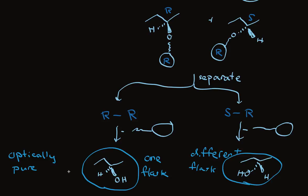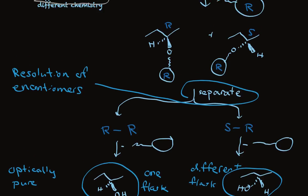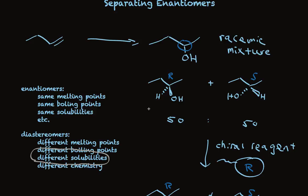This process is called resolution. It simply means we're separating them. Now this is a chemical method that's been used for a very long time. It was a long time ago that somebody realized that if they had diastereomers instead of enantiomers, the problem could be solved easily. And it is.